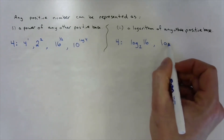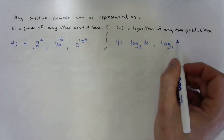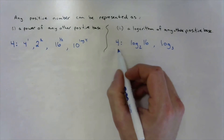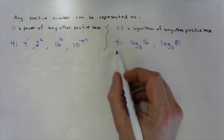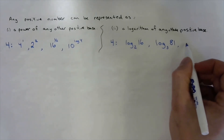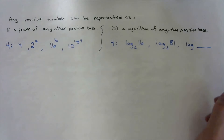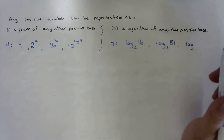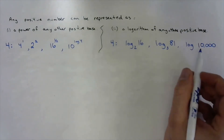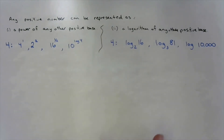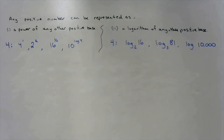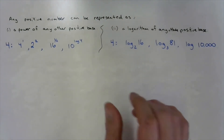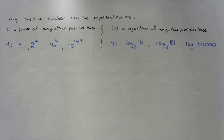We could do the same with a different base. Instead of base two, take base three: three to the power of four is eighty-one, so log base three of eighty-one is also four. For a common log with base ten, ten to the power of four is ten thousand, so log of ten thousand equals four. You can rewrite any positive number as a power or logarithm of any other positive number.